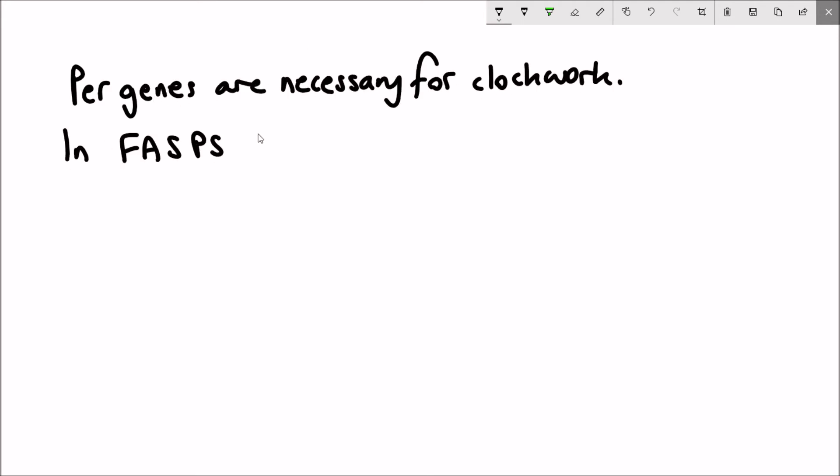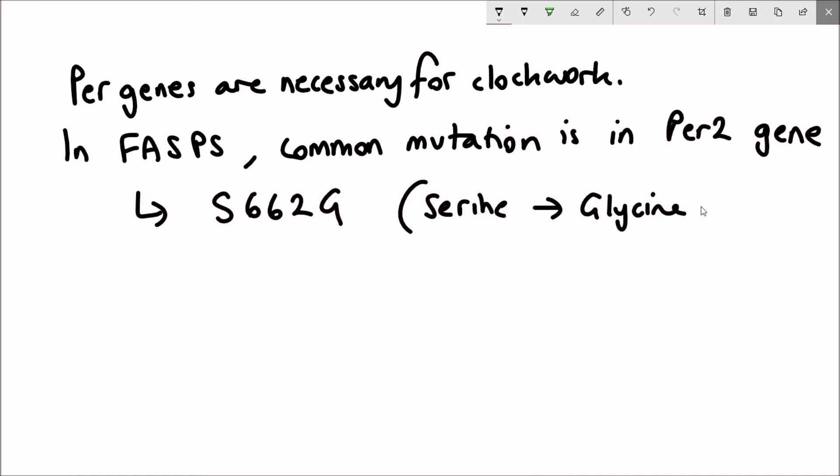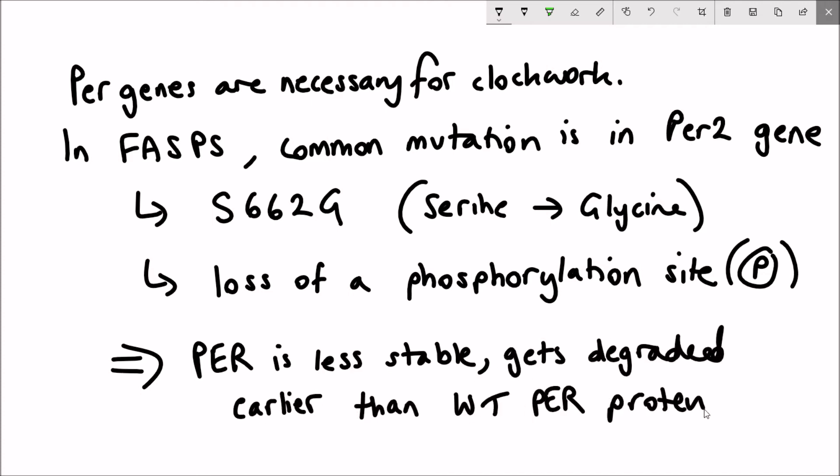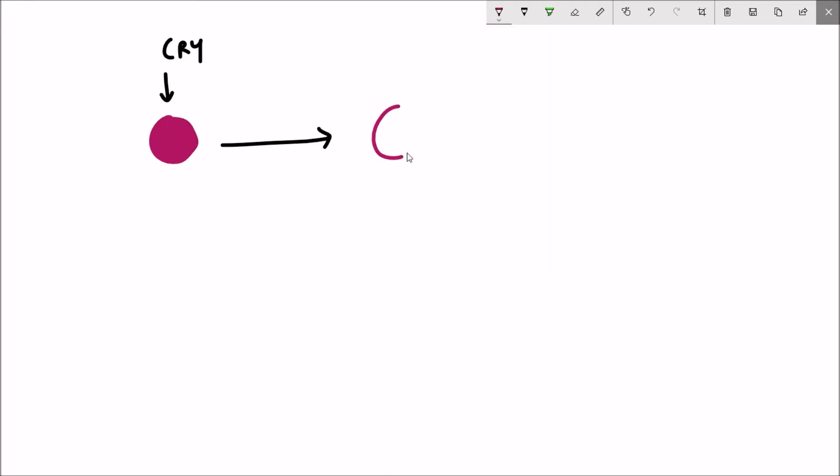However, in FASPS, there is a mutation that is commonly seen in the PER2 gene. This mutation is a serine amino acid that causes it to instead code for a glycine amino acid. The effect of this mutation results in a loss of a phosphorylation site. Phosphorylation of the period protein is important for regulating its degradation.